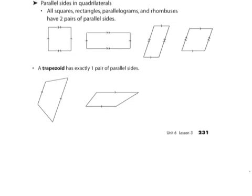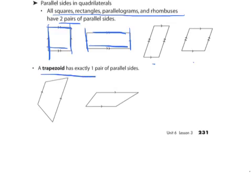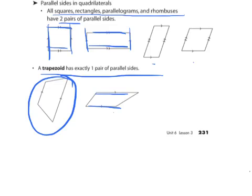We could discuss parallel sides on quadrilaterals. All squares, rectangles, parallelograms, and rhombuses have two pairs of parallel sides. This is one pair — a pair needs to have two. This is the other pair — that pair has two. So it only has two pairs of parallel sides, not four. Two equal sides making one pair, two equal sides making one pair, and same for the parallelogram and the rhombus. A trapezoid has exactly one pair of parallel lines. This is the traditional looking trapezoid, but this is also a trapezoid — it has one set of parallel lines and the other two sides are not parallel.